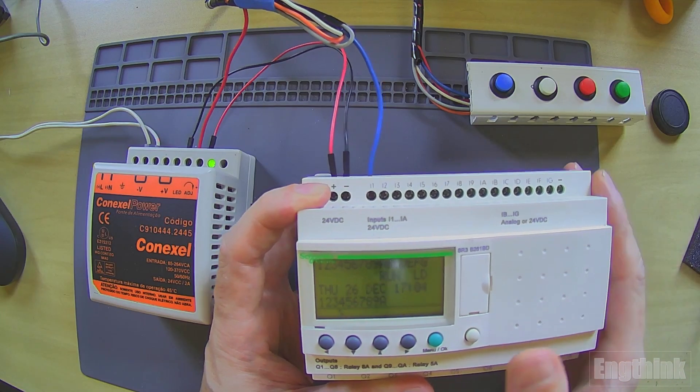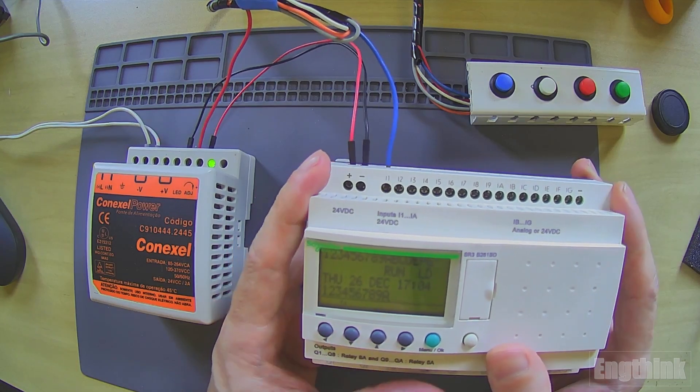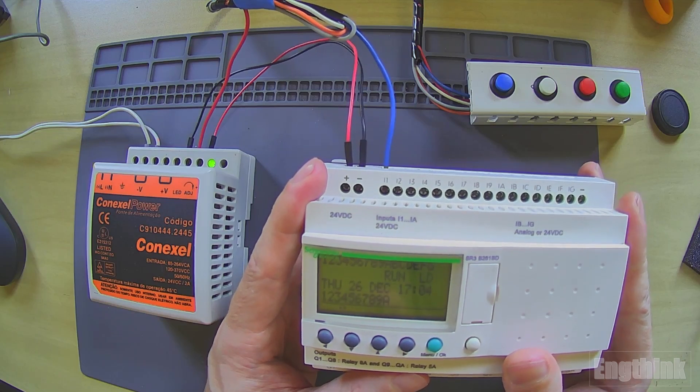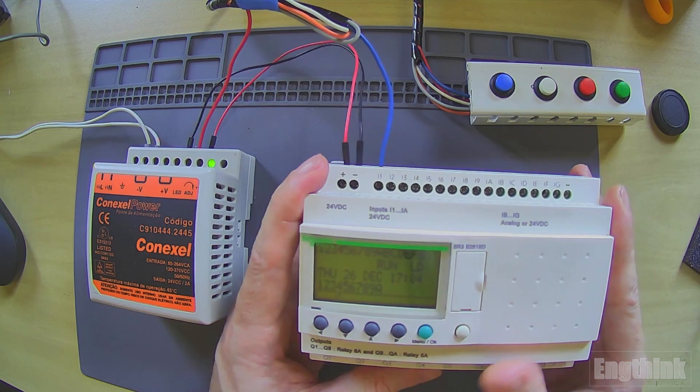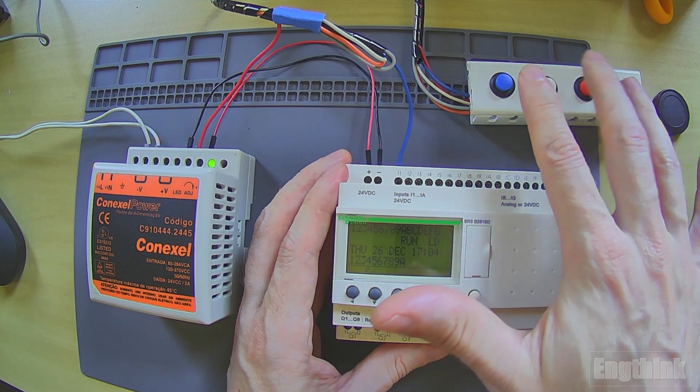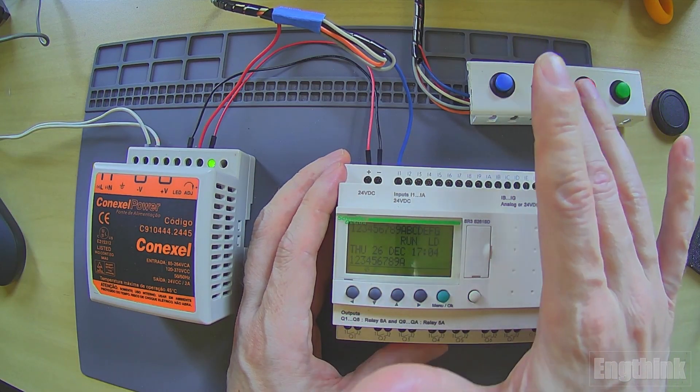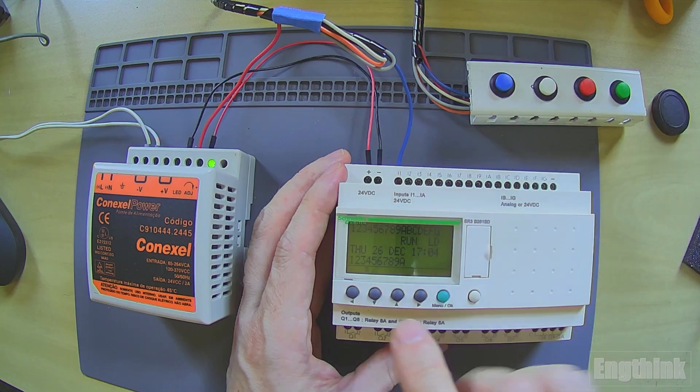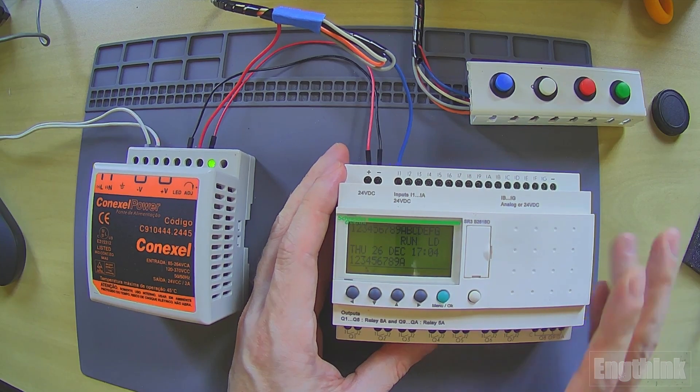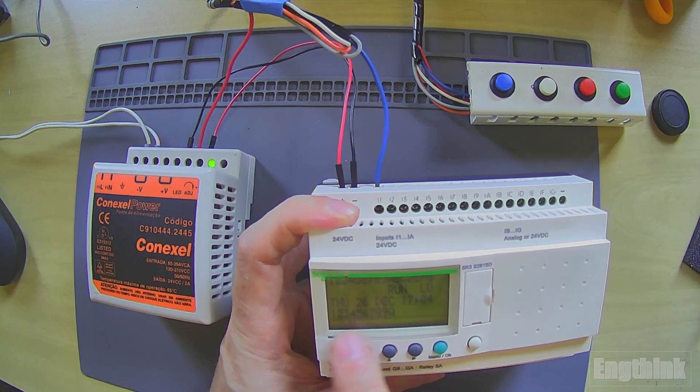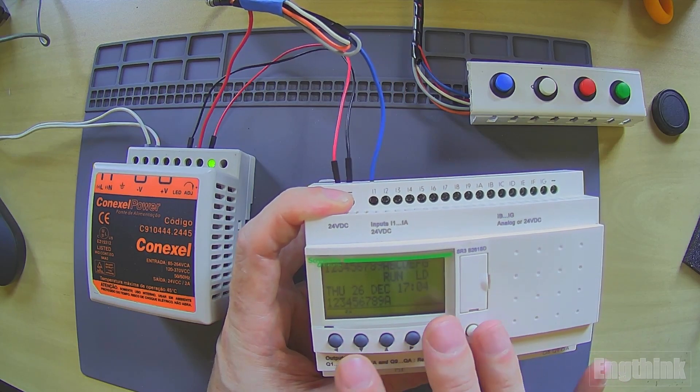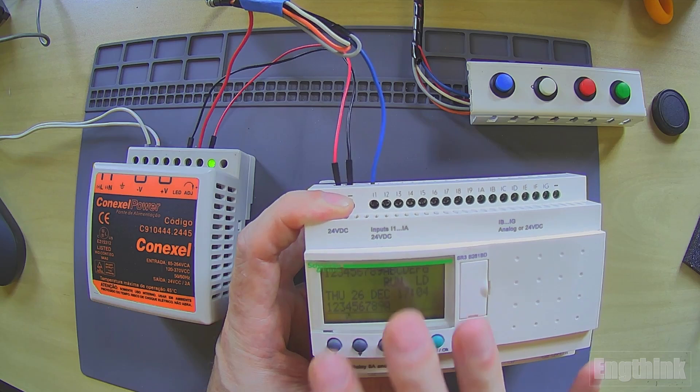There's another function we can use these buttons for, which is in our program or application. Instead of using an external button like I have here, for example, I have four external buttons and only one is connected. We can use these buttons directly in the smart relay. The objective of this video is to show how to use one of these keys in our application and how to activate these Z buttons in our program.